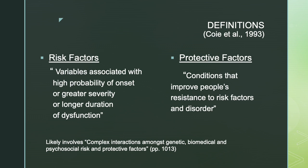When considering precursors, Coe et al. also defined what risk factors and protective factors are. These are the variables that are associated with a greater or lesser probability of later outcomes — these are the precursors. Risk factors are variables associated with a high probability of onset of an adverse outcome, or a higher probability of greater severity or longer duration of that adverse outcome. So risk factors are variables that emerge prior to the onset of the full disorder but which contribute to increasing the probability that the disorder will occur or be more severe in some way.